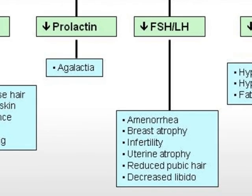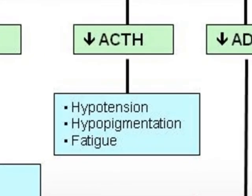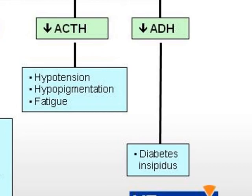Failure of postpartum lactation and secondary amenorrhea are also very common findings, but are not absolute requirements to diagnose Sheehan's syndrome. Adrenocortical insufficiency is one of the most important outcomes and may result in an adrenal crisis, particularly when the patient is under a stressful condition such as infection or surgery. Although atrophy of the posterior lobe of the pituitary and hypothalamic nuclei was found in over 90% of patients with Sheehan's syndrome, diabetes insipidus is very rare in this condition.